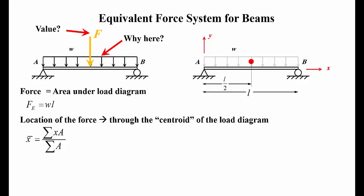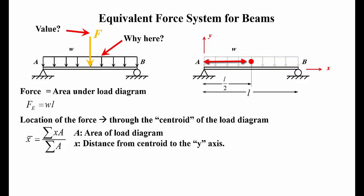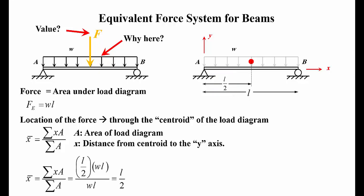The centroid is located at distance L/2 from A (or L/2 from B) if the total length is L. The magnitude of F is the area under the load diagram — the area of the rectangle, which is W times L — and we call it F_E for equivalent. The location is through the centroid, found using X̄ = ΣxA / ΣA. Here X is L/2 and A is WL, giving X̄ = L/2, confirming the location of F is at L/2.